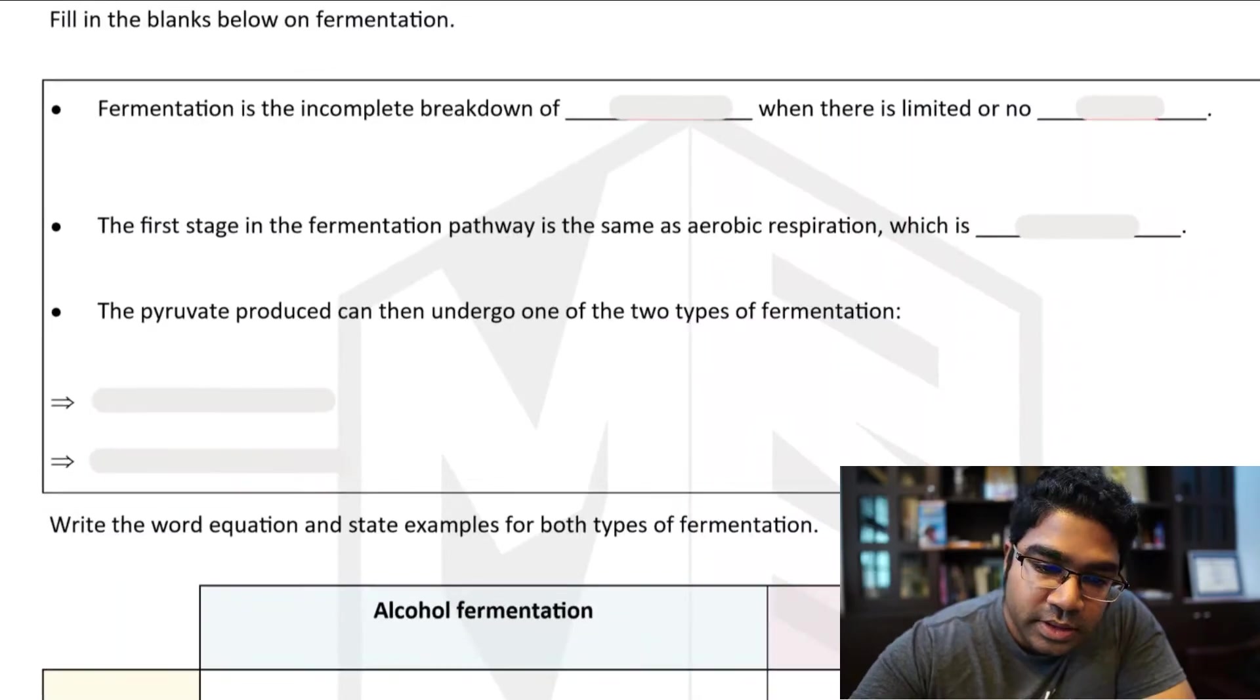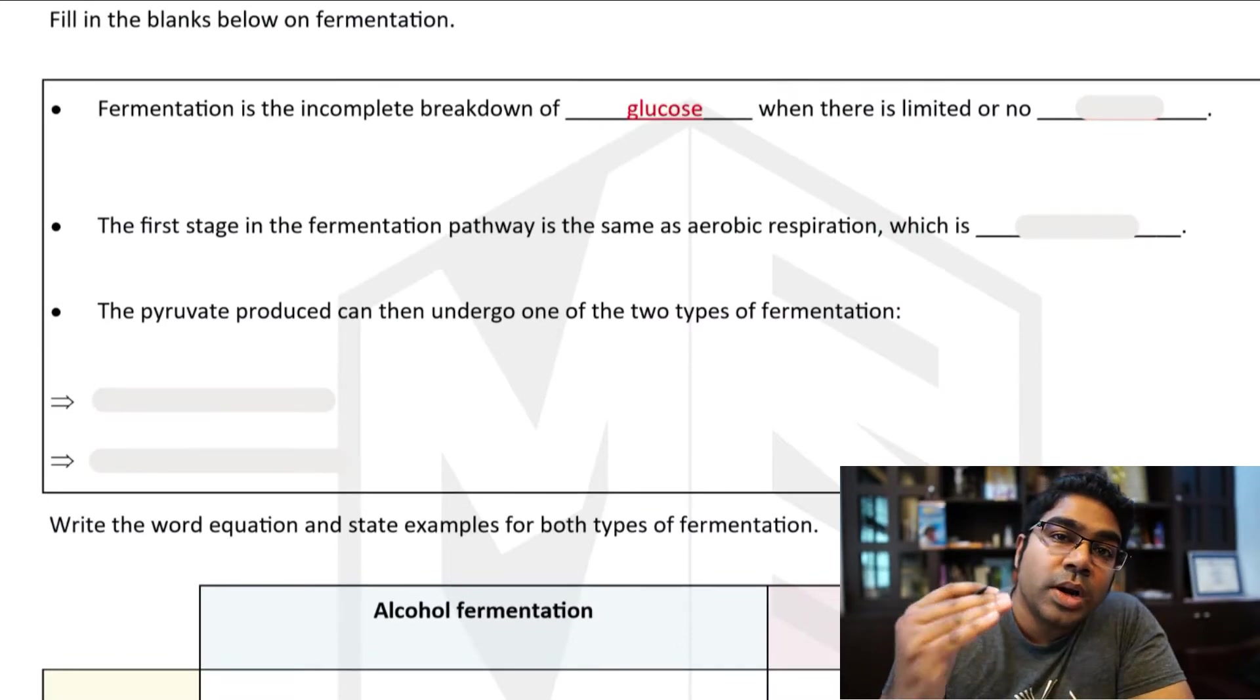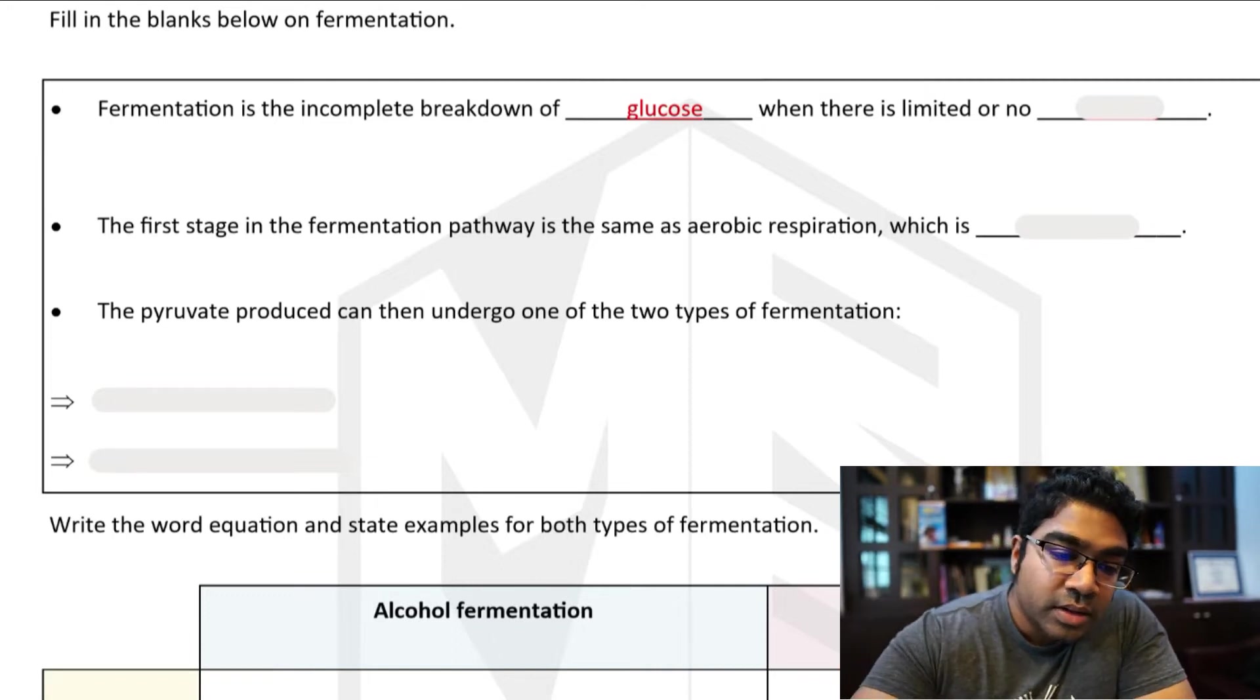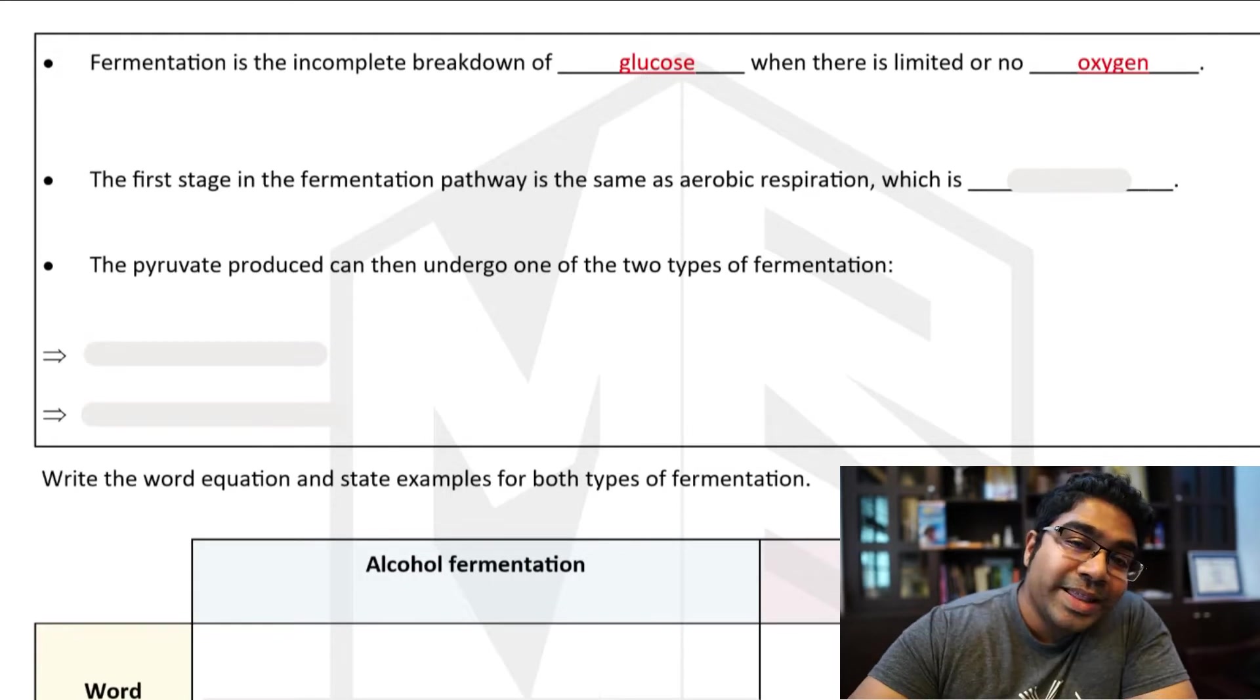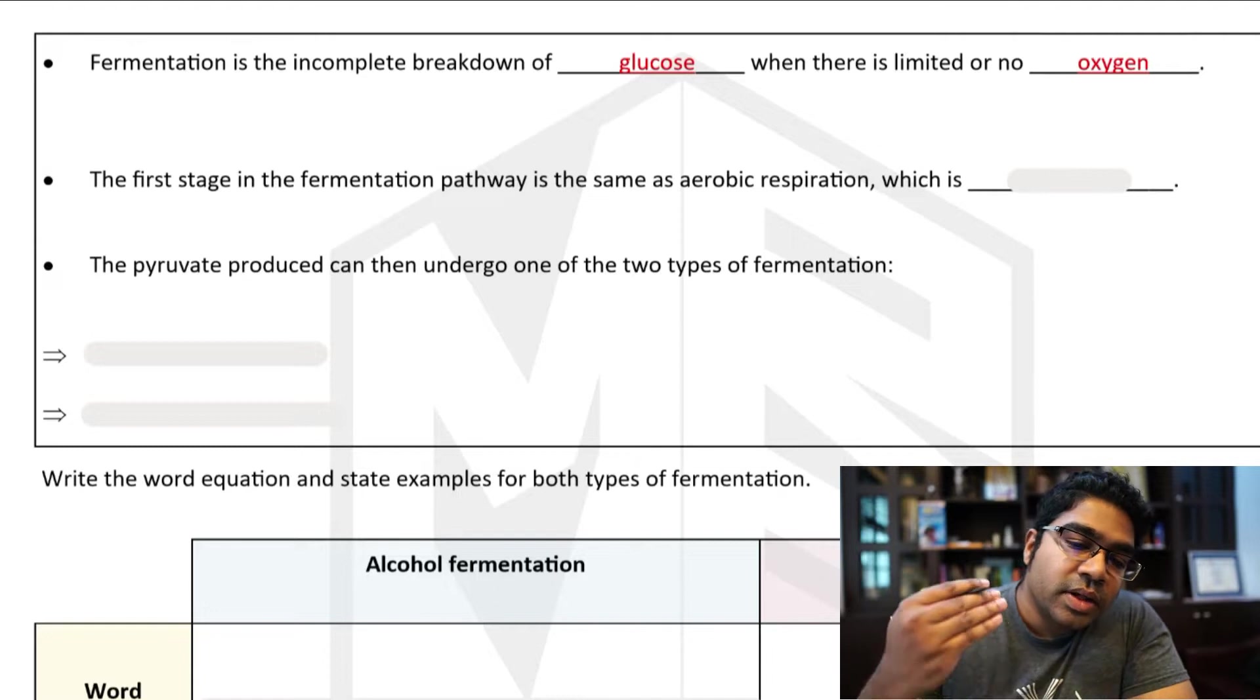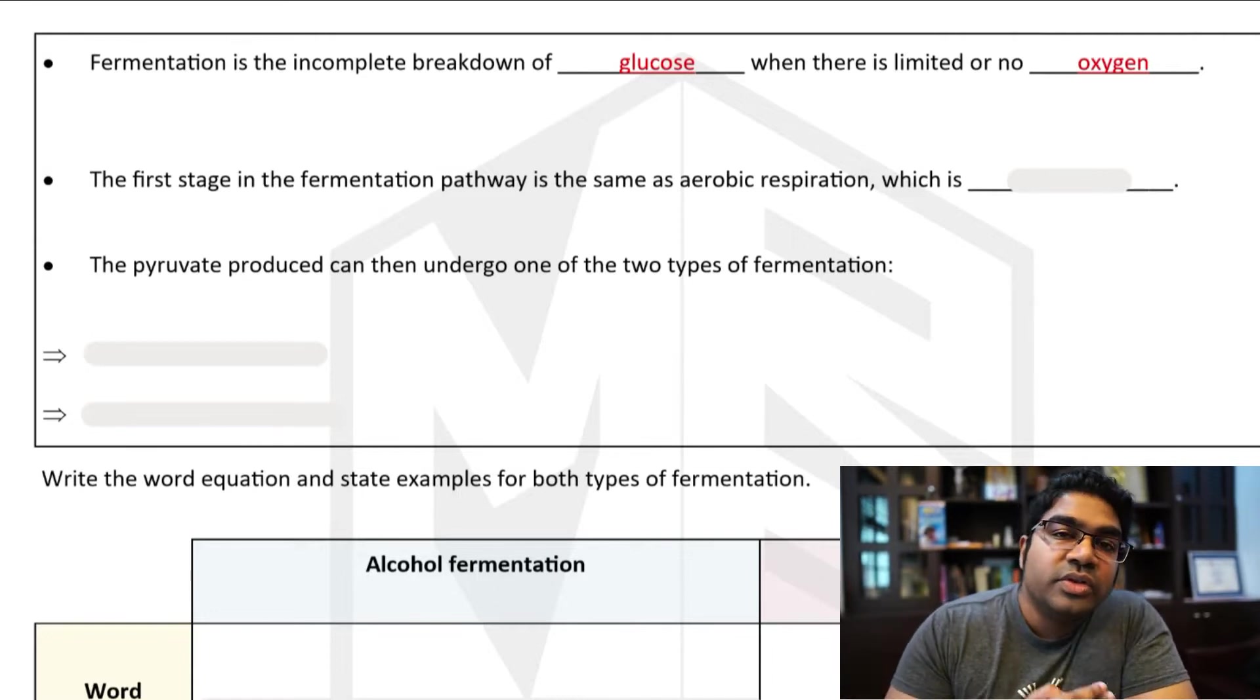Fermentation is the incomplete breakdown of glucose. This is one of the paths of cellular respiration and the point of this is to release energy. So fermentation is the breakdown of glucose when there is limited or no oxygen. When there is a limited or insufficient supply of oxygen, then fermentation is chosen over aerobic respiration.